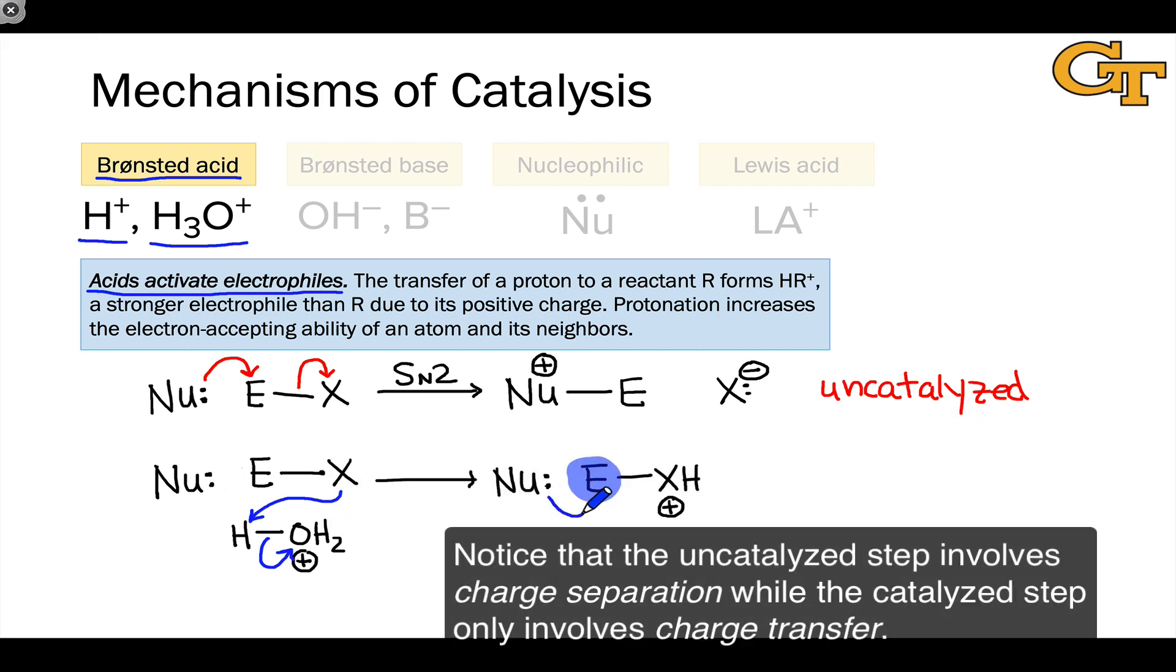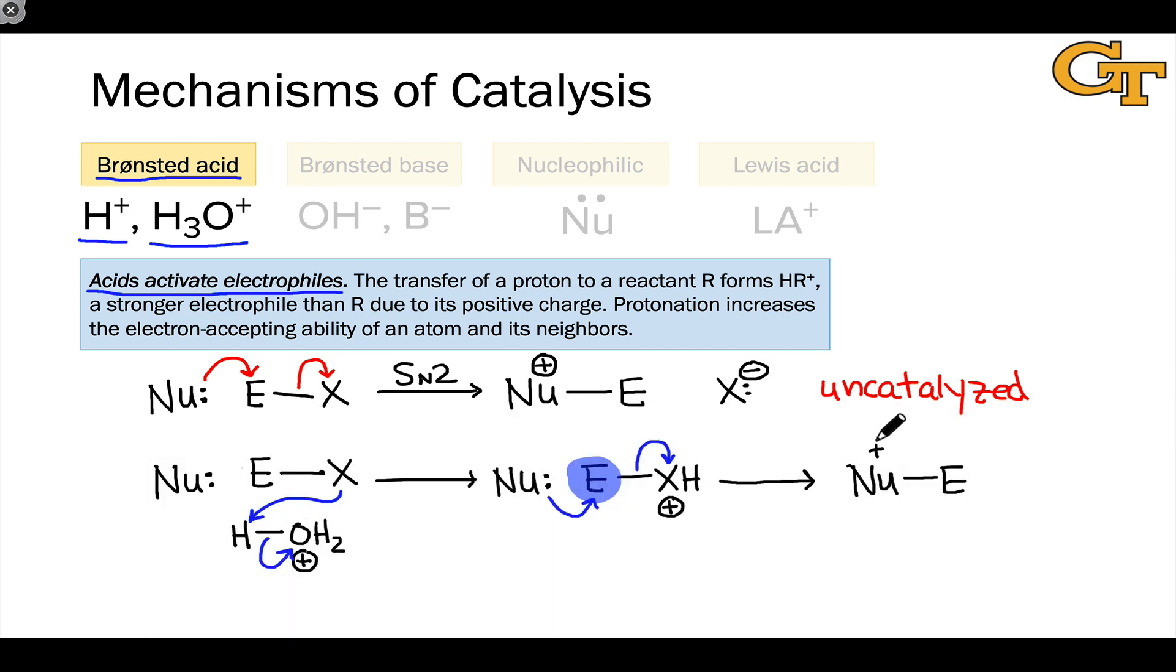This lowers the activation energy of the key SN2 elementary step. Notice now that we've generated the product of the uncatalyzed process with a positive charge on the nucleophilic atom and a bond between the nucleophilic and electrophilic atoms. We've also generated the species HX, and I'm going to draw that down here for reasons that will become clear in a second.